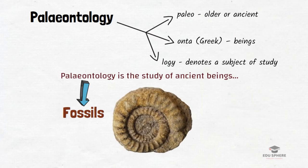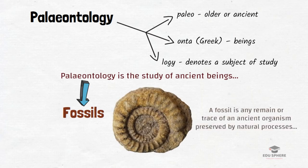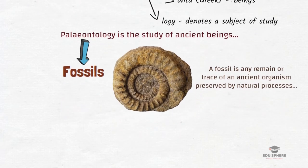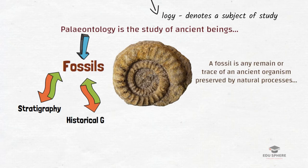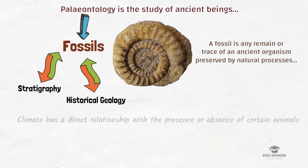Fossils are simply the remains of plants, animals, fungi, bacteria, and single-cell living things that have been replaced by rock material, or impressions of organisms preserved in rock. Fossils are used by paleontologists to recreate the history of earth. Paleontology is mutually interdependent with stratigraphy and historical geology, because fossils constitute a major means by which sedimentary strata are identified and correlated with one another.